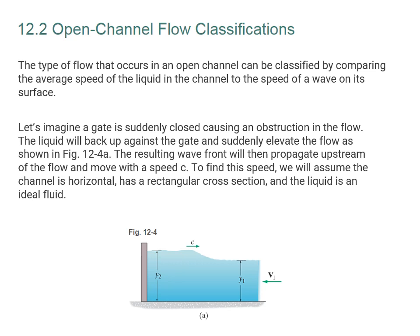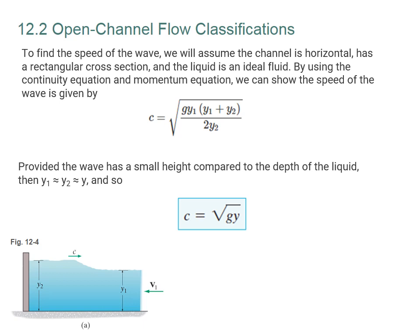Assuming the channel is horizontal with a rectangular cross section and the liquid is an ideal fluid, by using the continuity equation and the momentum equation we can show the speed of the wave is given by an equation involving Y1 and Y2. Provided the wave has a small height compared to the depth of the fluid, Y1 and Y2 are approximately equal, so we call them Y, and simplify to: the speed of the wave C equals the square root of g times Y, where g is the acceleration of gravity and Y is the average depth inside the channel. The wave speed is thus directly proportional to the square root of the depth of the water.